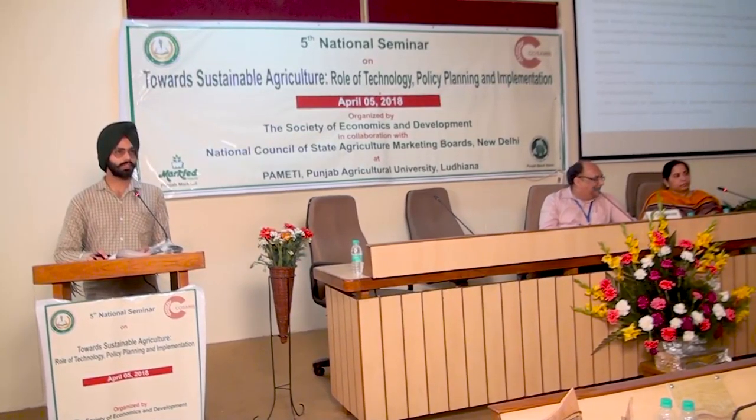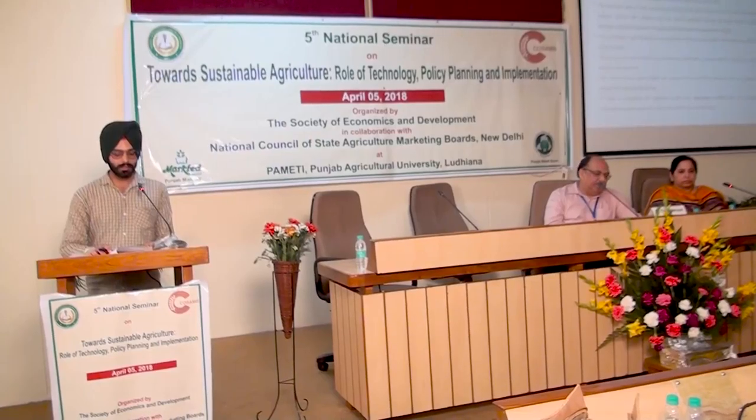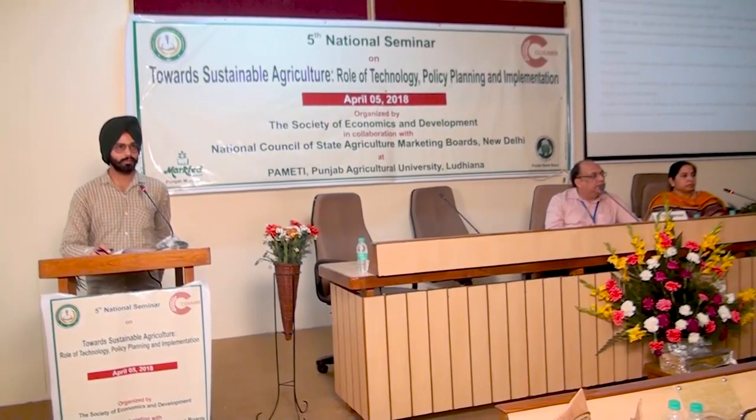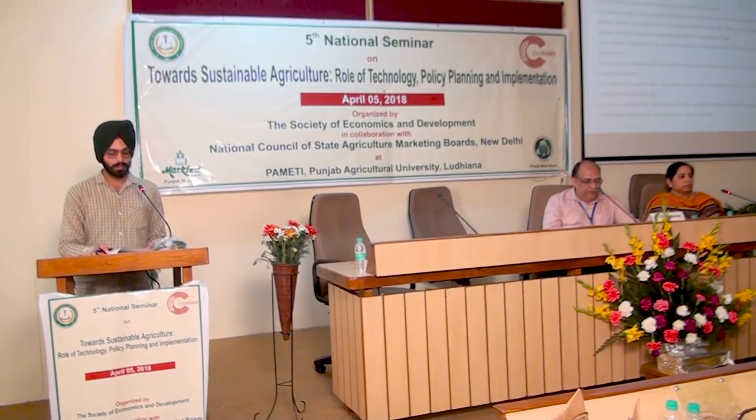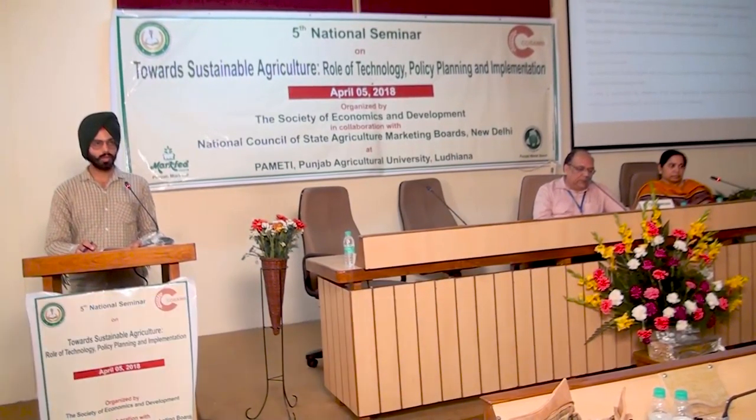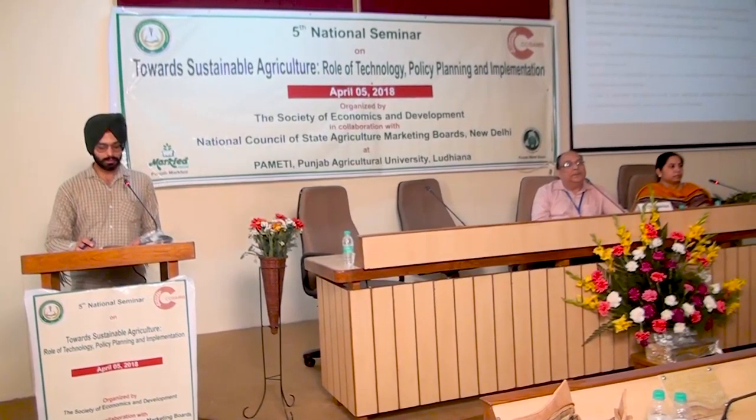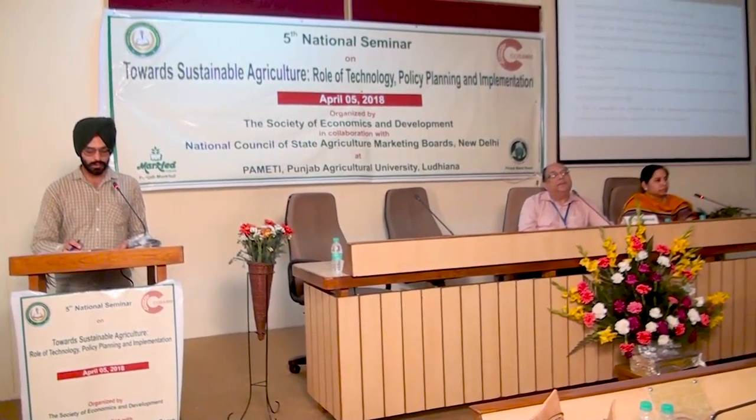Secondary data has been used for accomplishing the objectives of the study. Secondary data on area, production, productivity under fodder crops and livestock population in selected districts was collected from various published sources like Basic Animal Husbandry Statistics, Statistical Abstract of Punjab, and Animal Husbandry Department of Punjab. The availability of green fodder was calculated by dividing total green fodder production by the number of adult bovines. Young ones were converted into adult units, and the requirement of green fodder was worked out by considering the recommended 40 kg green fodder required per adult animal per day. Averages and percentages were used to draw relevant inferences.